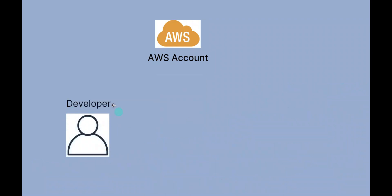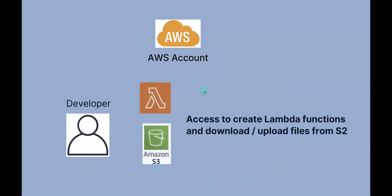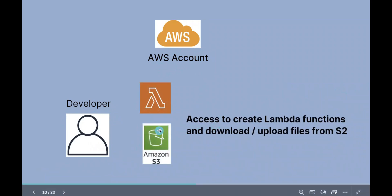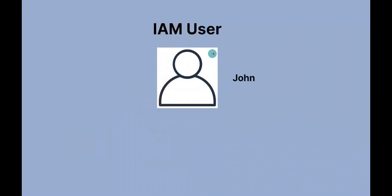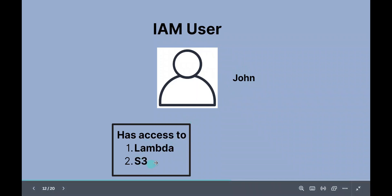So let's imagine you have one developer. You want this developer to access your AWS account and perform some actions, like creating a Lambda function and uploading and downloading files from AWS S3. You want to give access to this developer only for these particular resources — Lambda and S3 — and not allow access to any other resources or services. To solve this, you can create what is called an IAM user for this developer named John and grant him access only to Lambda and S3.